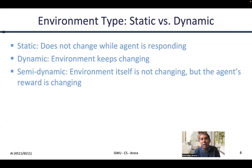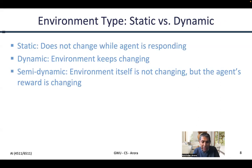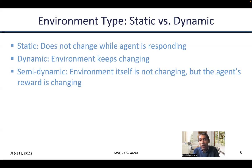Let's look at the next environment attribute, which is static versus dynamic. If we say that the environment does not move while the agent is responding, that means it's static — it does not change. If the environment itself is moving while the agent used its sensors to understand the environment state, and then by the time it gets to move the environment has already moved — such as in a traffic environment — then we say the environment is dynamic.